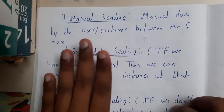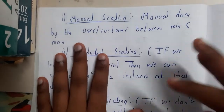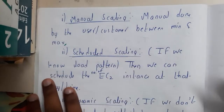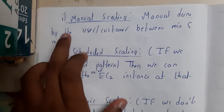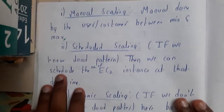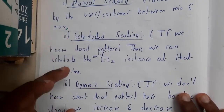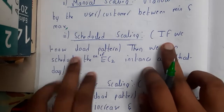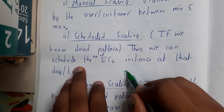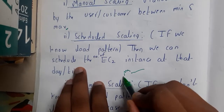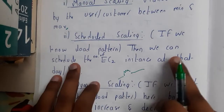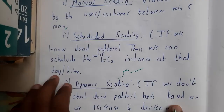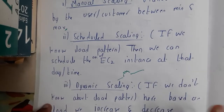Manual scaling means you as a user change the configuration based on your requirement — for example, knowing today will be busy due to result announcements or ticket bookings, so you manually scale up. Scheduled scaling is used when you already know the traffic pattern — at what times traffic will be high or low. In scheduled scaling, instances are increased according to your schedule, whether by days, hours, or specific times.